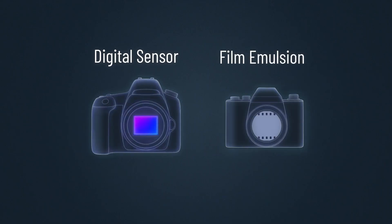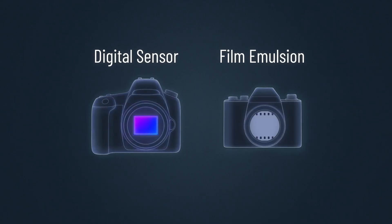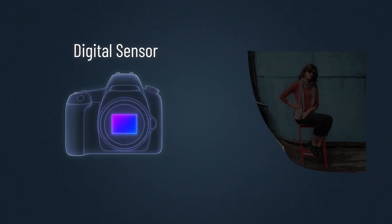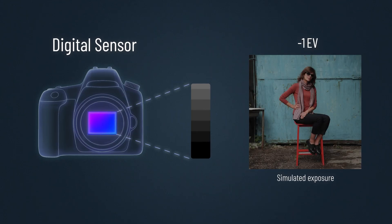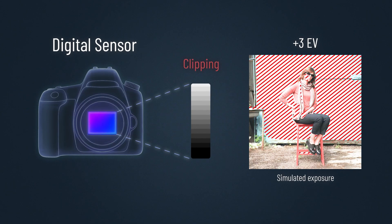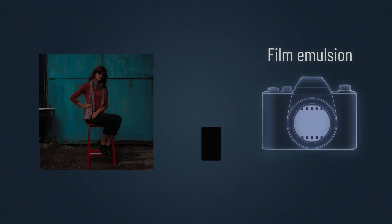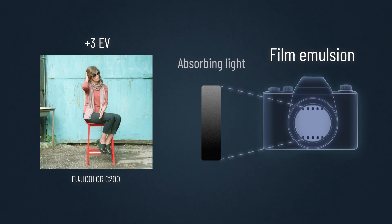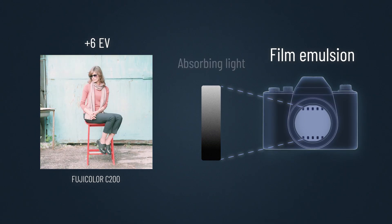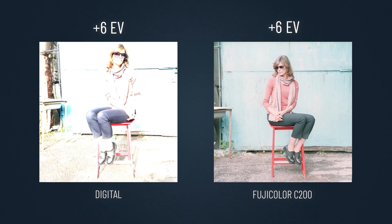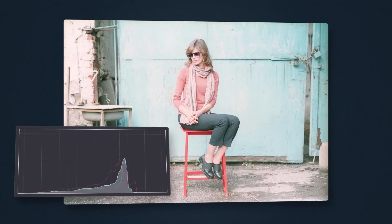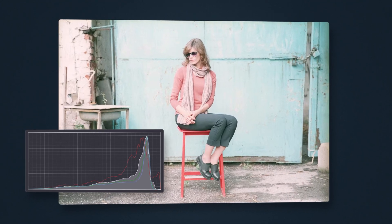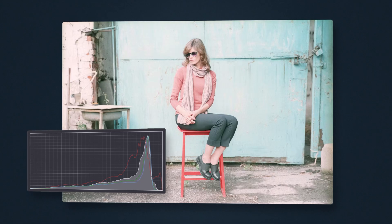Digital sensors and film emulsions react to light very differently. A sensor captures light like a measuring cup — once it's full it just overflows. That's why digital highlights clip so suddenly. Film, on the other hand, behaves more like a sponge. It absorbs light gradually and reaches saturation much more smoothly. As a result, film preserves highlight details better even when overexposed. The image looks softer with lifted midtones and a natural low contrast feel.